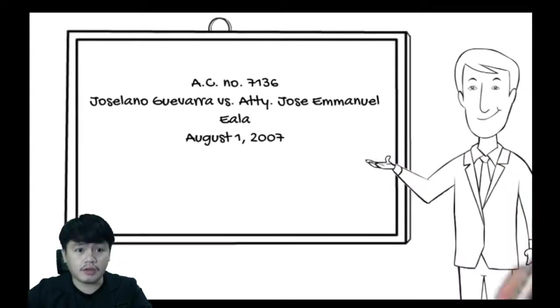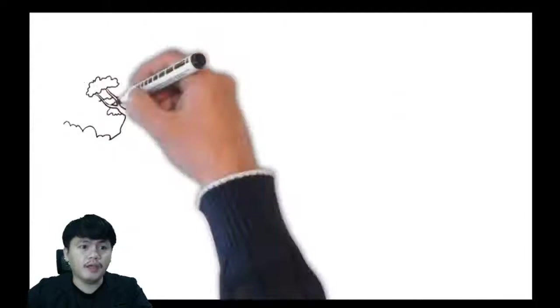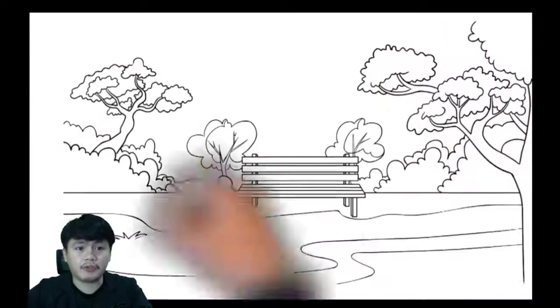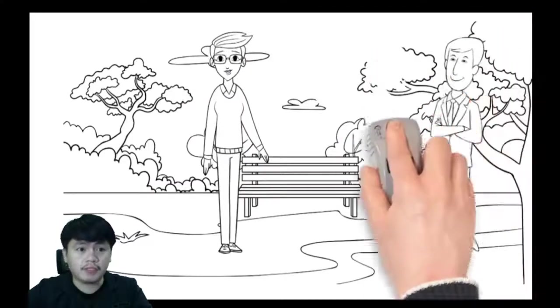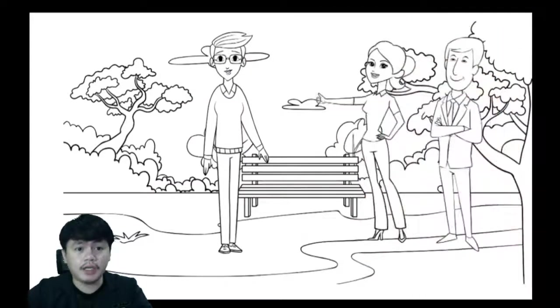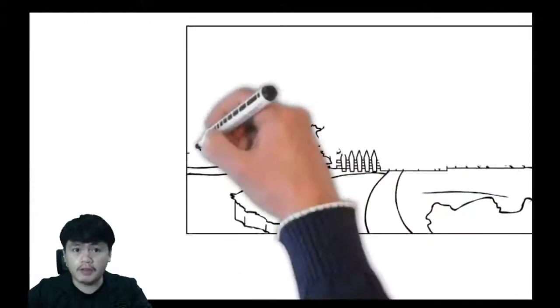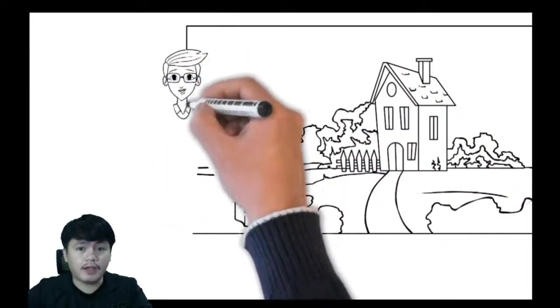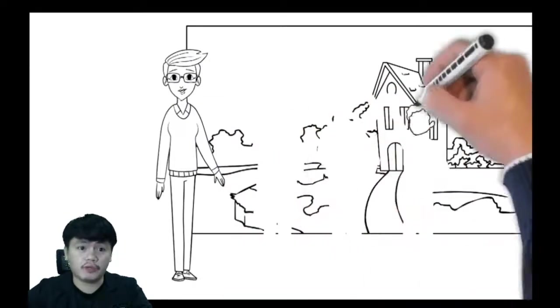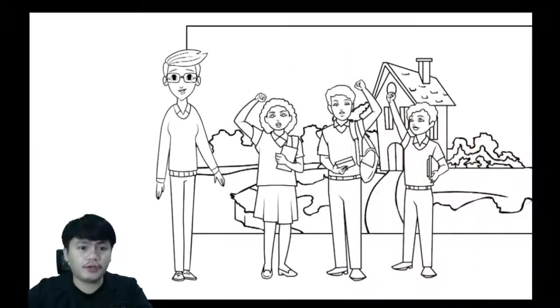Here are the facts of the case. Jose Liano Guevara met attorney Jose Emanuel Iyala months prior to Guevara's marriage with Miss Irene Moje, who introduced Iyala to him as a close friend. Iyala was already married at that time with three children and his original wife.